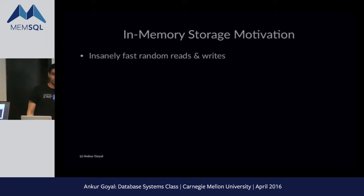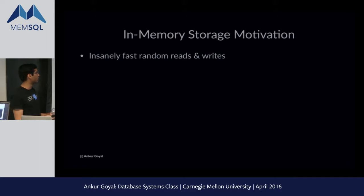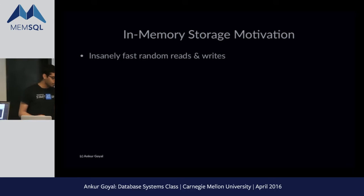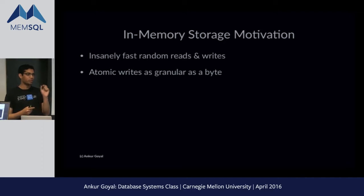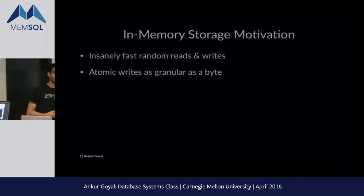So, in-memory storage. Let's first think about what in-memory gives you. The first thing is that you have insanely fast random reads and writes — that's the defining thing about memory that makes it very different from disk. The other thing is very fast atomic writes. You can compare and swap with the granularity of a single byte or even two bytes, and you can do this very performantly. Doing this on a disk, even an SSD, is prohibitively slow.